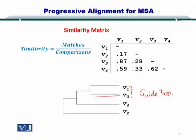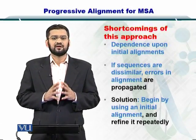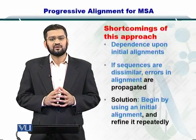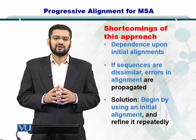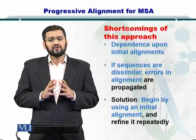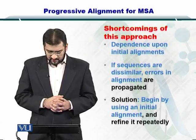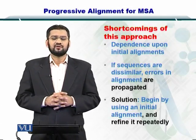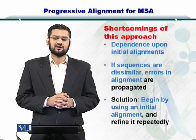You put more similar sequences on the same branch, followed by sequences that are increasingly different. However, this approach has some shortcomings. For instance, if you have performed an alignment as the first step which may be incorrect, then your entire guide tree will be biased towards that — there is a lot of dependence on the first alignment used to create the guide tree. Also, if the sequences are dissimilar, this can introduce error in your alignment. To overcome this, you create a guide tree and then repeat the process iteratively to create a better, improved version.